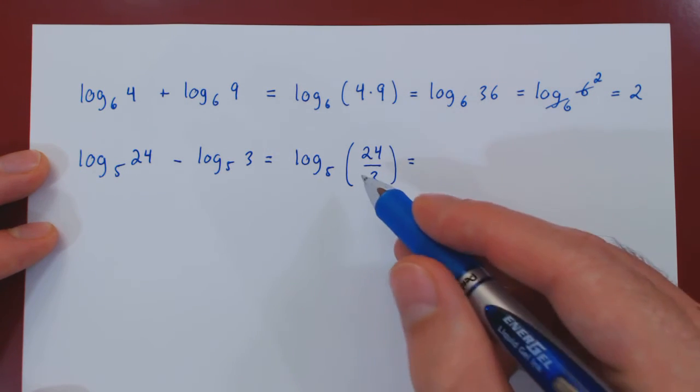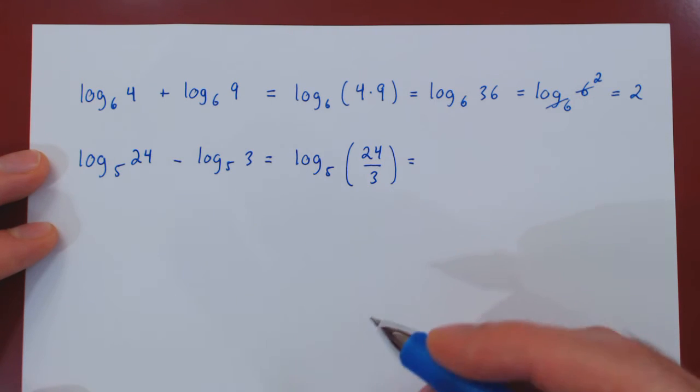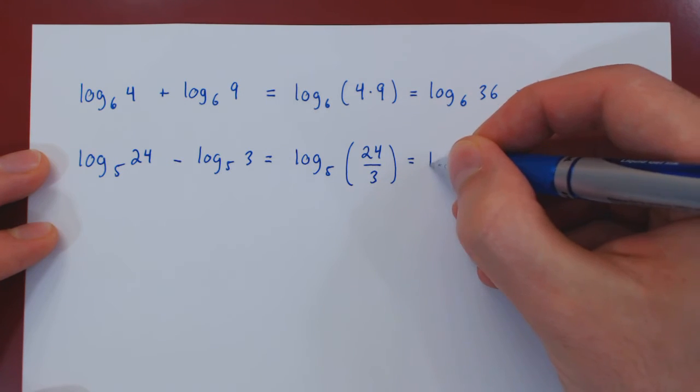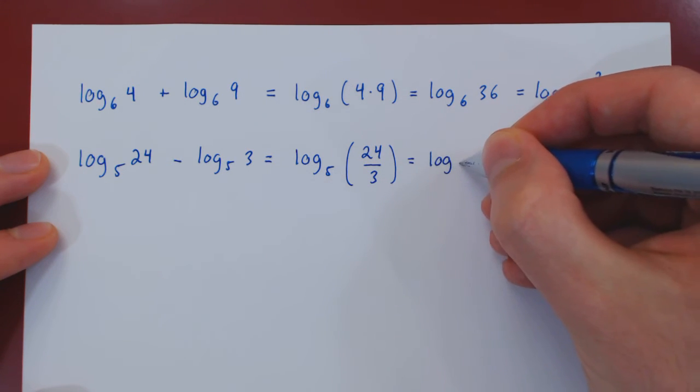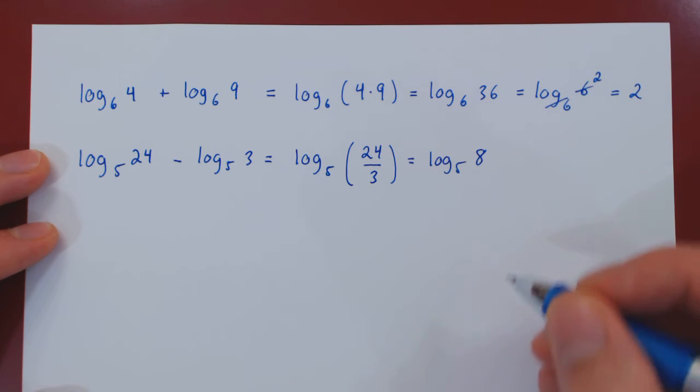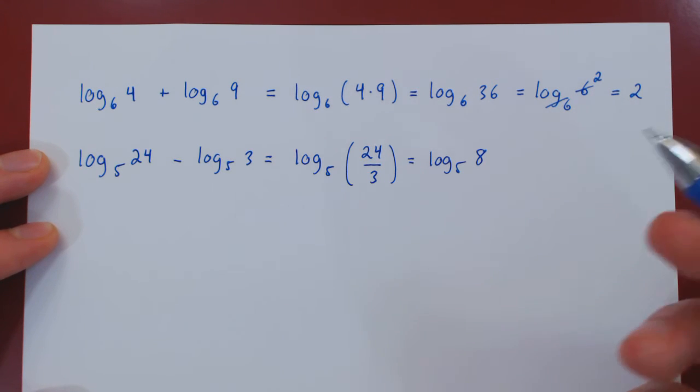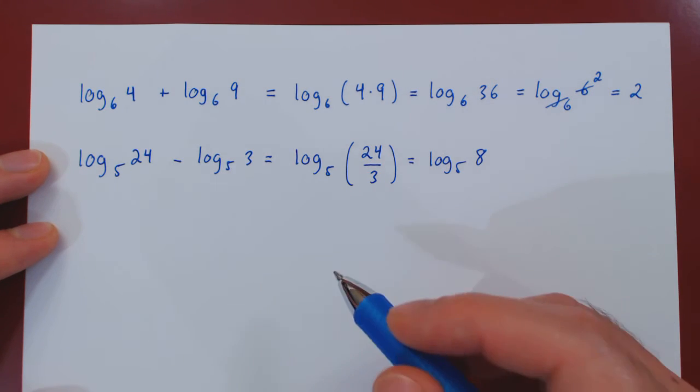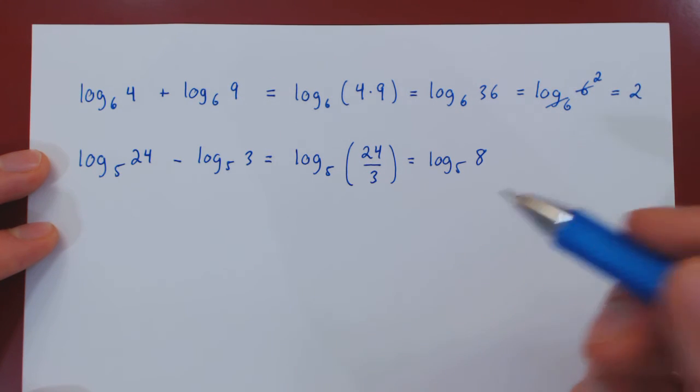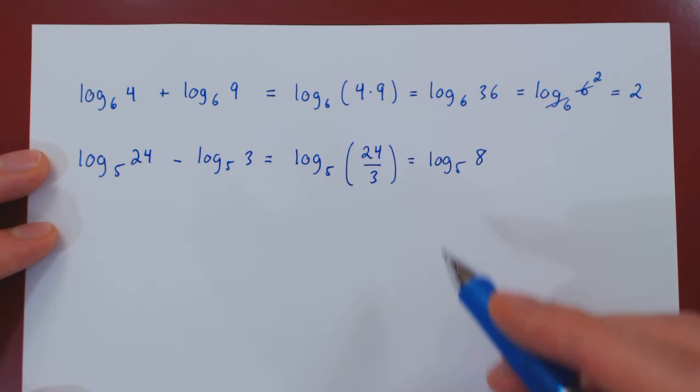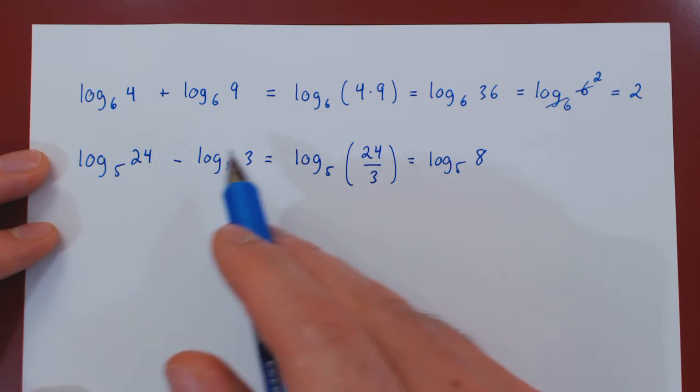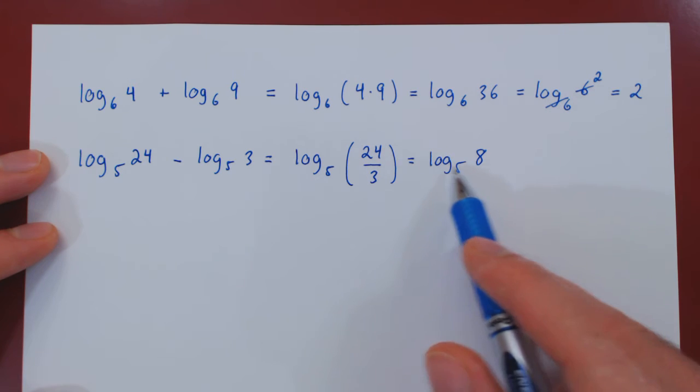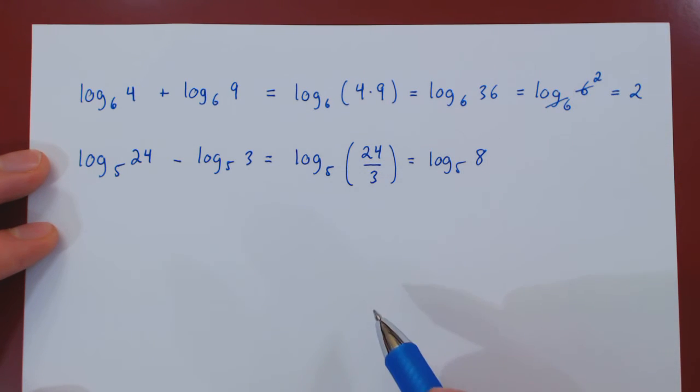We can simplify further. 24 is divisible by 3. The result of course is 8. So we have the logarithm base 5 of 8. And now here we could do one last manipulation. But you'll see that which of the two answers is the best is debatable. So we now have reduced this difference of logarithms as a single logarithm, the log base 5 of 8.